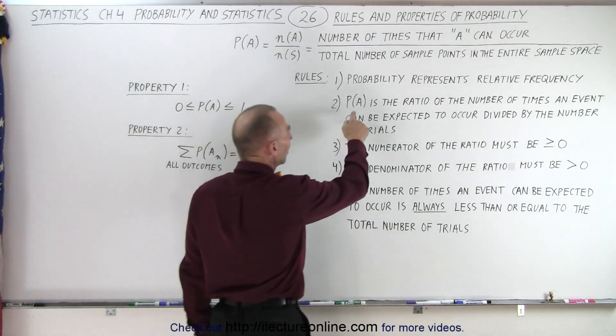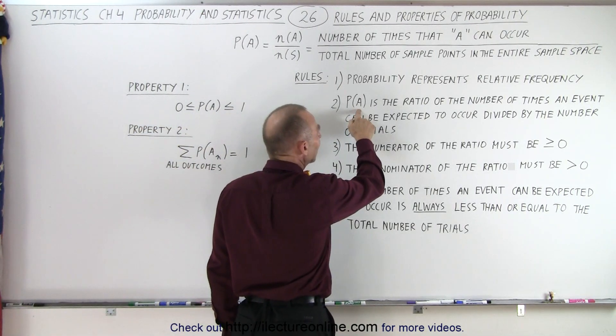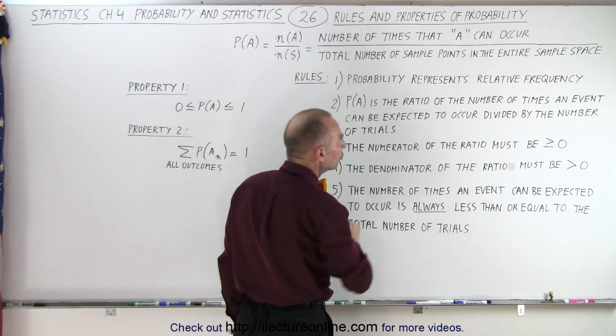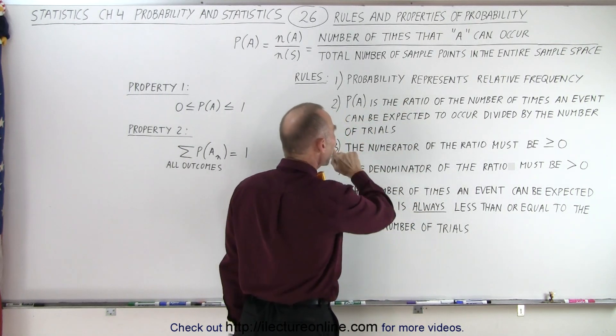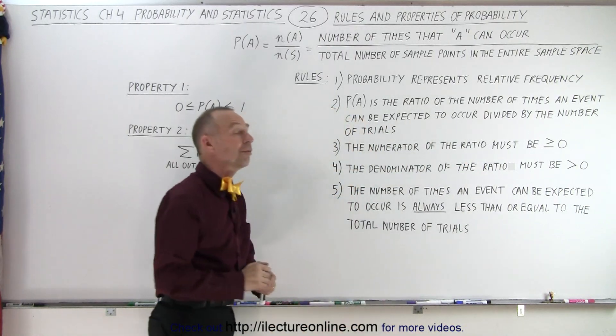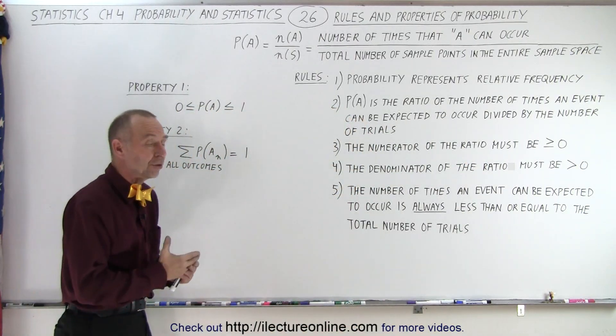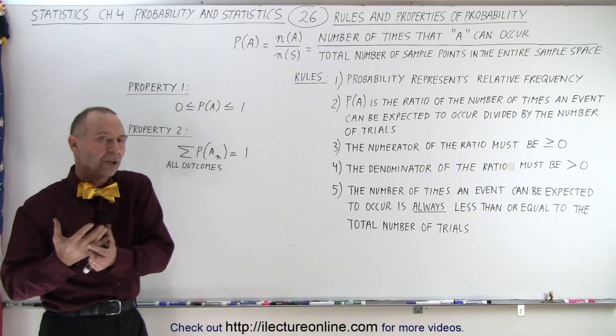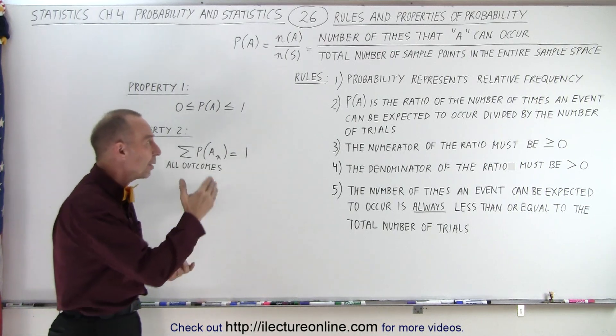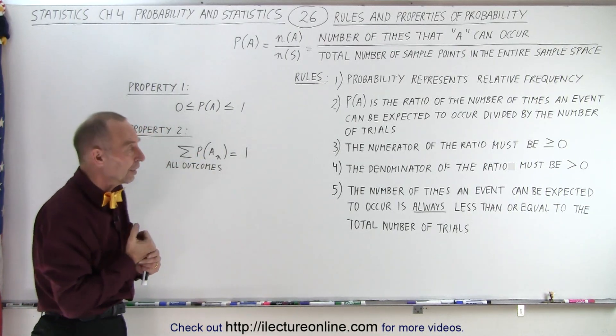The probability that A will happen, or that A is expected to happen, is the ratio of the number of times an event can be expected to occur divided by the total number of trials. So if you do it 10 times, what is the expected number of times that we get a particular event to occur?